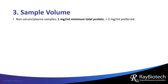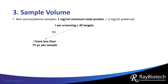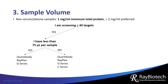Third, how much sample do you have? For samples other than serum and plasma, the original protein concentration should be at a minimum one milligram per milliliter; however, protein concentrations over two milligrams per milliliter are preferred to obtain higher signal-to-noise ratios. If you are screening 40 or fewer proteins at a time and have less than 75 microliters per sample, then Quantibody, Rayplex, and G series arrays should be used. If you have more than 75 microliters, then C series arrays are also an option.